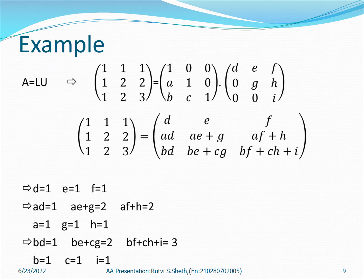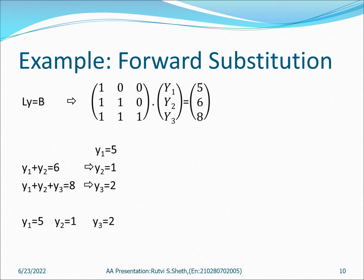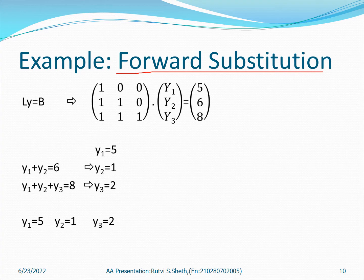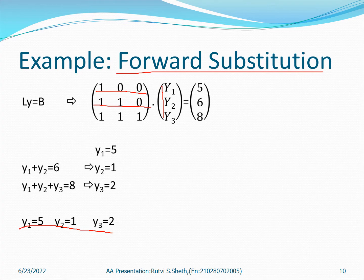Once we have the value of L, we plug L, Y, and the given B into LY = B. This is known as forward substitution — we get Y1 first, then Y2, then Y3 by multiplying each row of L with the column Y. The values are Y1 = 5, Y2 = 1, and Y3 = 2.